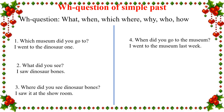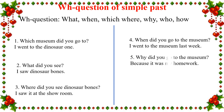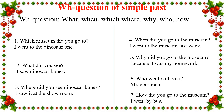Example 4: Where did you go to the museum? I went to the museum last week. Example 5: Where did you go to the museum? Because it was my homework. Example 6: Who went with you? My classmate. Example 7: How did you go to the museum? I went by bus.